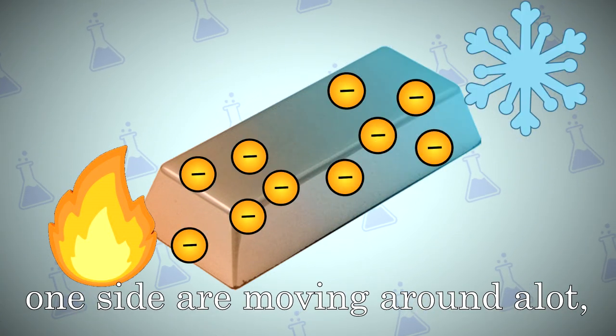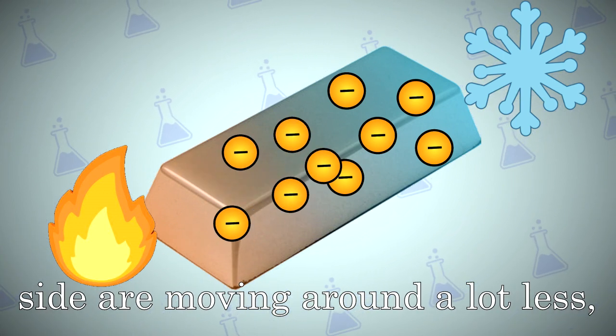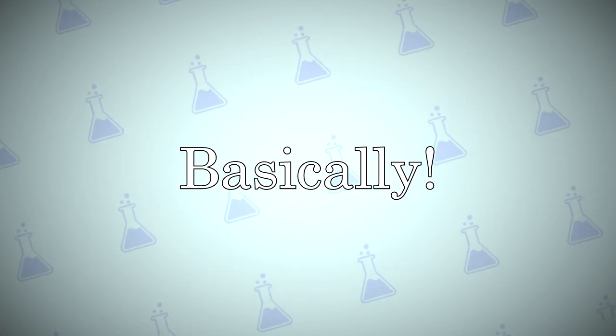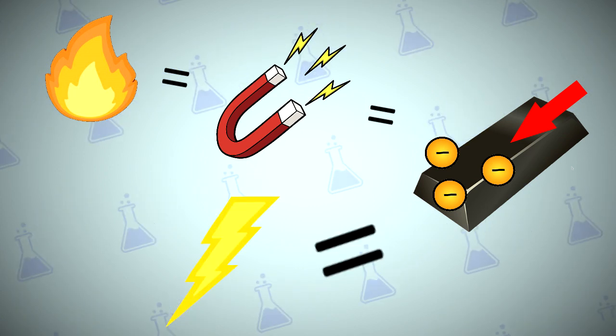And therefore, the electrons on one side are moving around a lot, while the electrons on another side are moving around a lot less, which means one side is positive and one side is negative. Basically, heat equals magnet, which equals flow of electrons through magnet, which equals electricity.